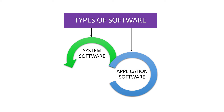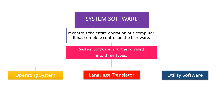Types of Software: there are two types of software — system software and application software. System software is a software that controls the entire operation of a computer; it has complete control on the hardware. System software is further divided into three types: operating system, language translator, and utility software.